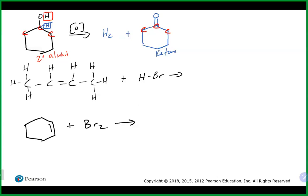Yes, there is another hydrogen implied there. Remember carbon needs four bonds — it has one bond coming in, one bond going up to OH, one bond from the other side, so there has to be a hydrogen sitting there. It's not usually drawn in line structure, but it's definitely going to be there.